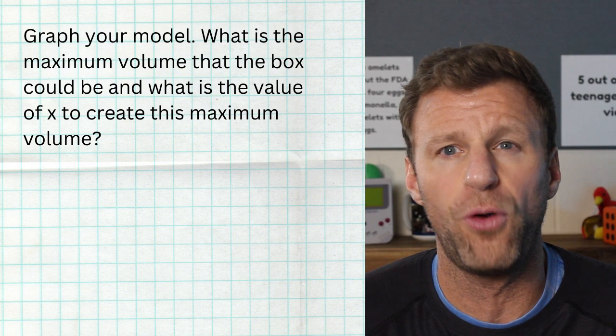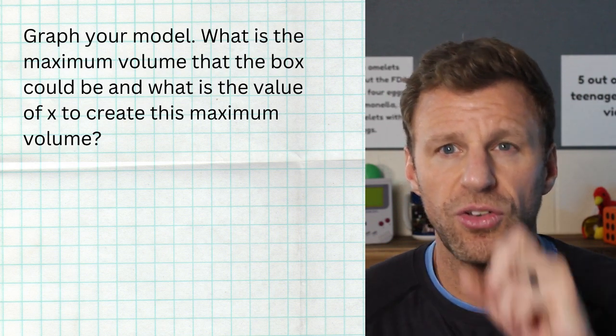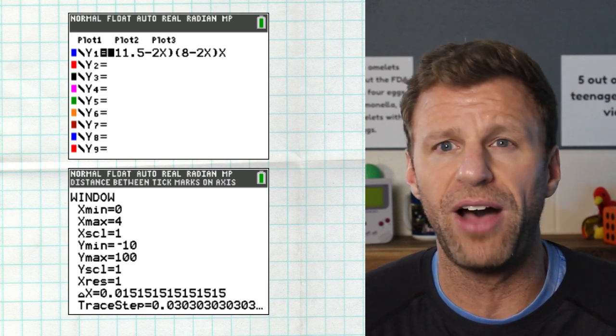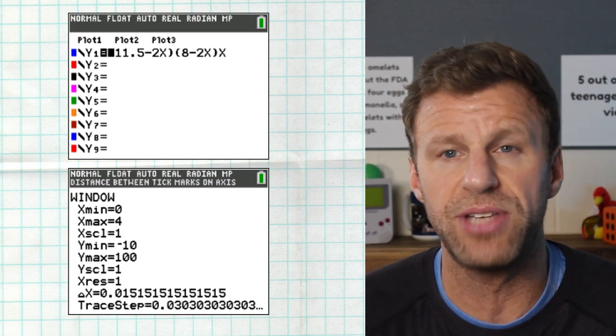But I'm going to try to do it on a TI-84, because that's what you're going to be allowed to use on the AP exam. So first thing I'm going to do is I'm going to hit Y equals, type in the function, 11.5 minus 2X times 8 minus 2X times X.